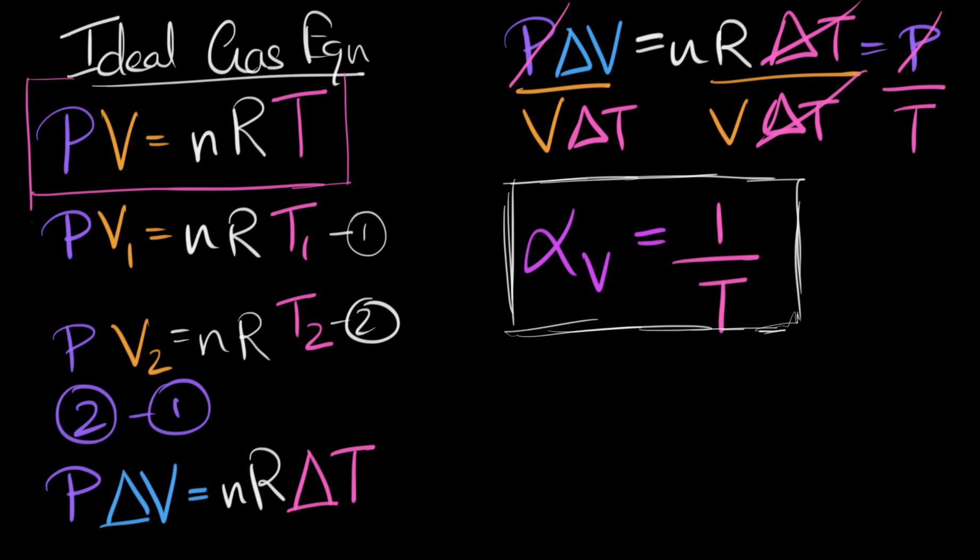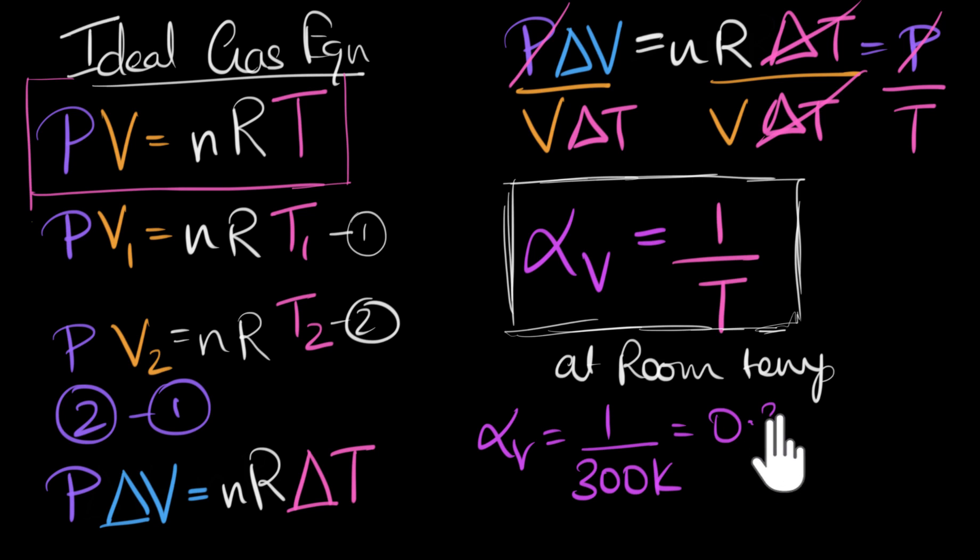So if we do that at room temperature, the room temperature is about 300 Kelvin. So alpha V would be 1 over 300 Kelvin. What would that be? Well, 1 divided by 3 is 0.3 times 10 to the power minus 2 Kelvin inverse. But let's convert this to 10 power minus 6. That's how it is in the table. So to convert to 10 power minus 6, we will shift the decimal four places towards the right. That'll give us 3000 times 10 power minus 6 Kelvin inverse.